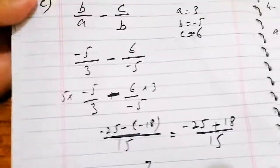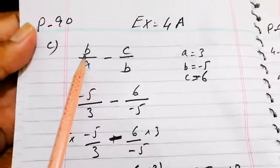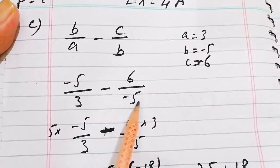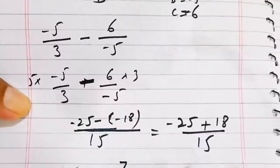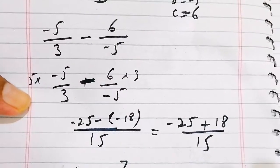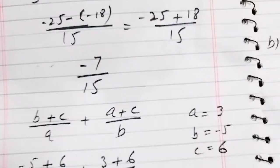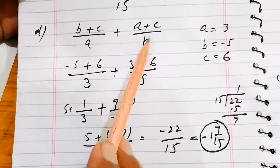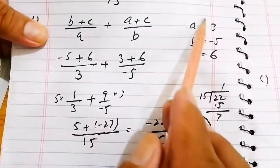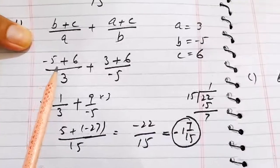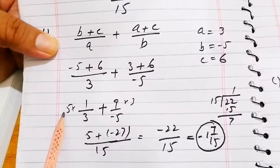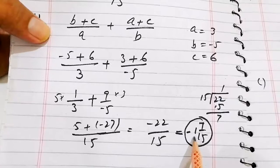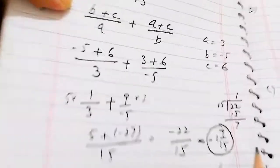For part (c) of question 3, b over a minus c over b: substituting the values and solving, the answer is minus 7 over 15. For part (d), b plus c over a plus a plus c over b: substituting the values, taking LCM and calculating, the answer is minus 1 and 7 over 15.